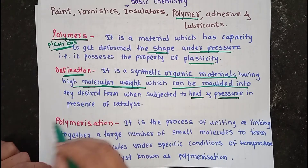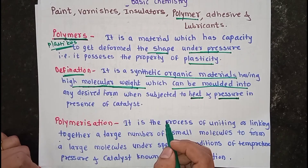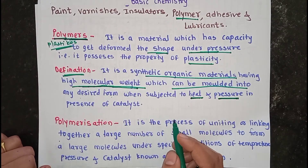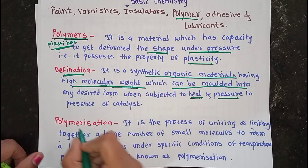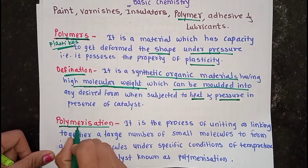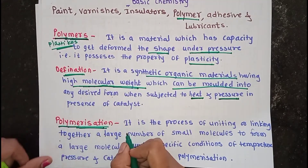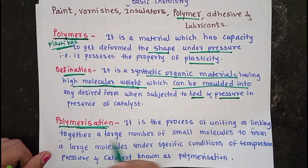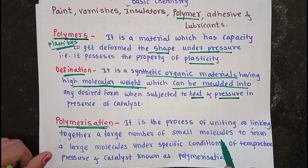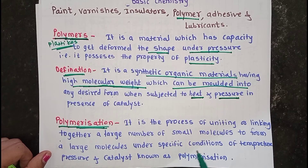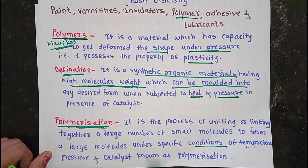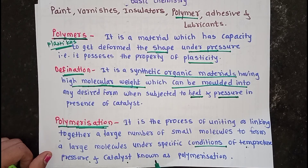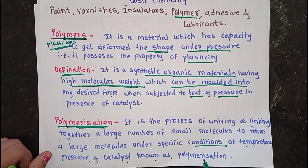Now let's see what the polymerization process is. Polymerization is the process of uniting or linking together a large number of small molecules to form a large molecule under specific conditions of temperature, pressure, and catalyst. This process is known as polymerization.